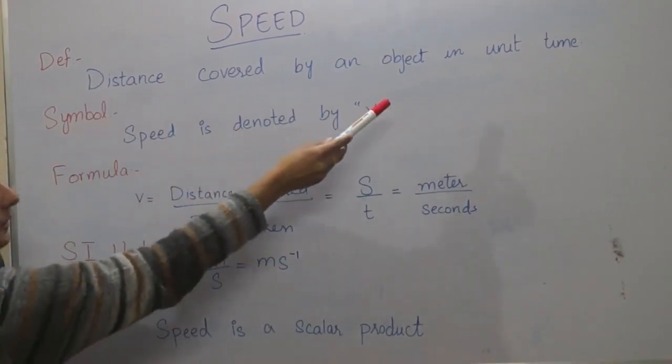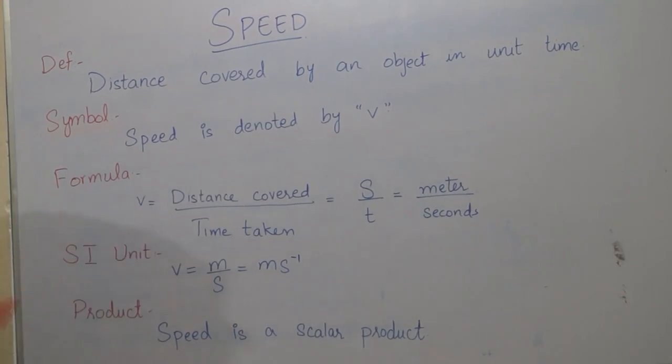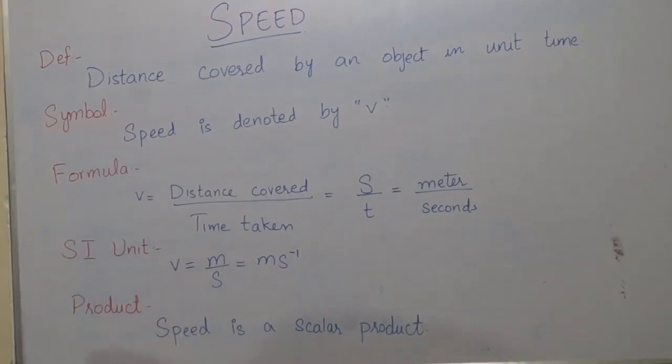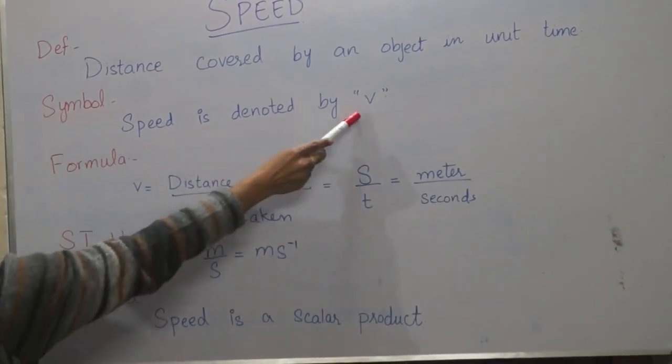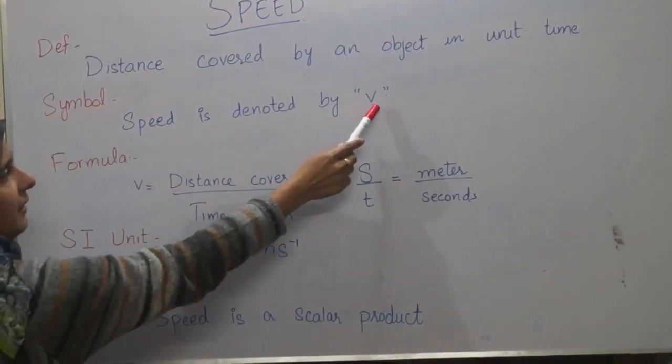Distance and time, these two are the important terms in the topic of speed. Its symbol is V. Speed is denoted by V.